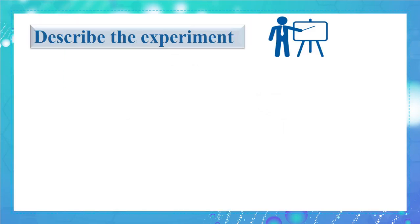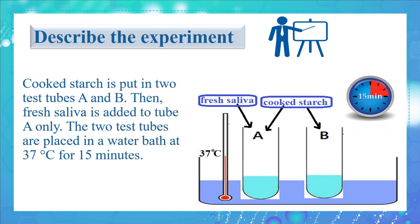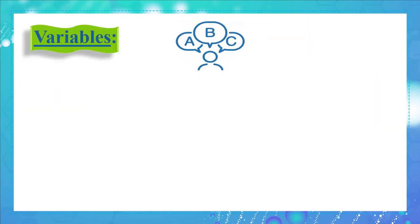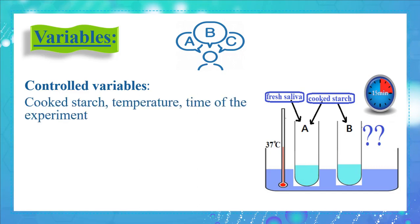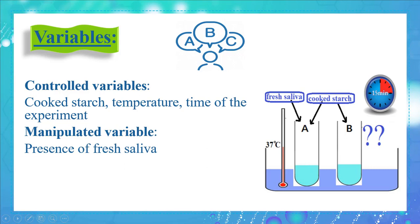Let's now describe the experiment. Cooked starch is put in two test tubes A and B, then fresh saliva is added to tube A only. The two test tubes are placed in a water bath at 37 degrees Celsius for 15 minutes. The controlled variables, which are common in both test tubes, are cooked starch, temperature, and time. The manipulated variable is the presence of fresh saliva, and the responding variable is the transformation of starch.